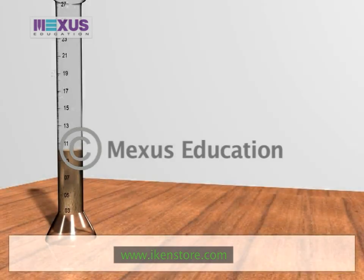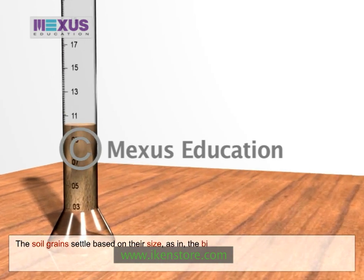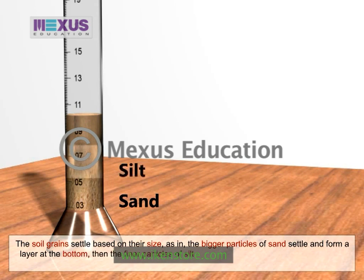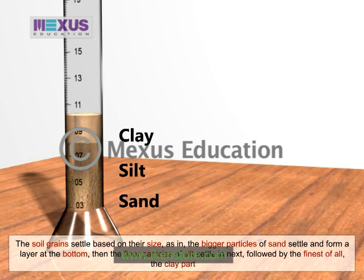The soil grains settle based on their size. The bigger particles of sand settle and form a layer at the bottom. Then the finer particles of silt settle in next, followed by the finest of all — the clay particles.